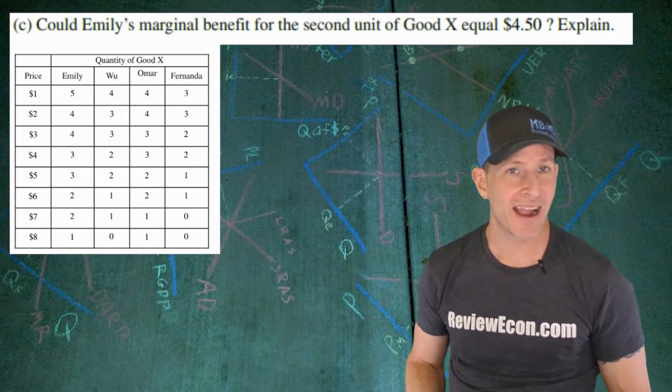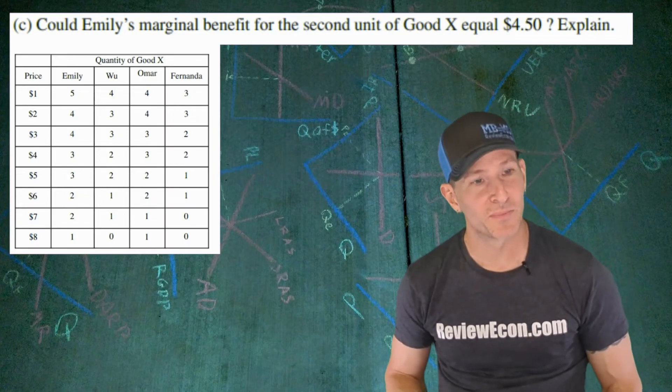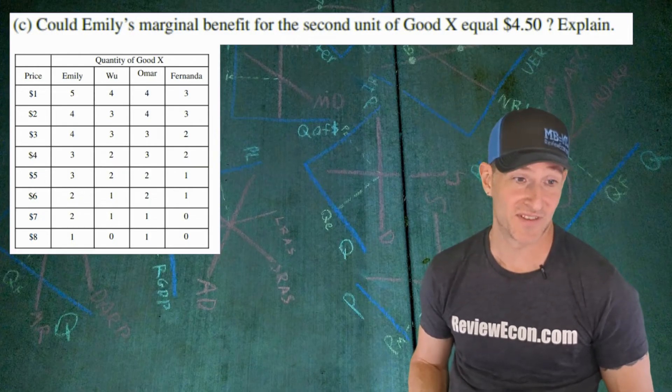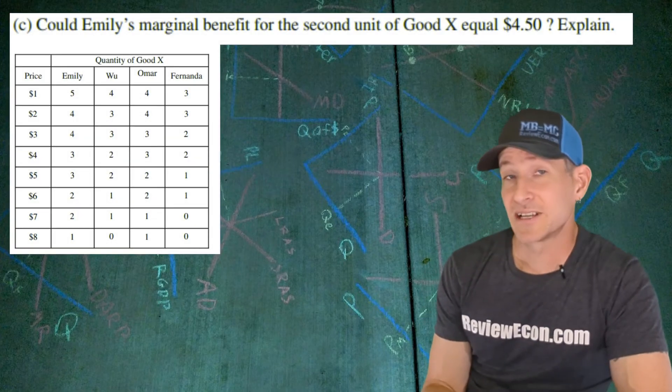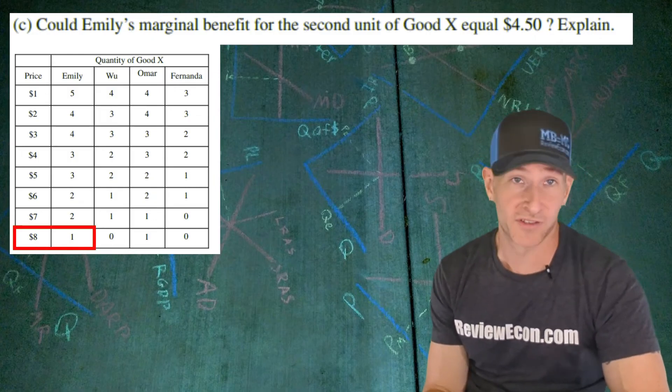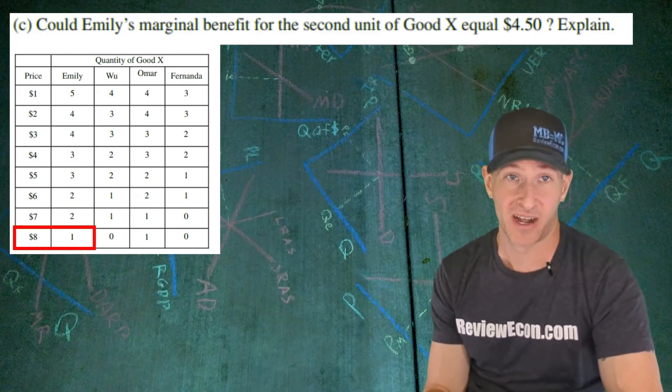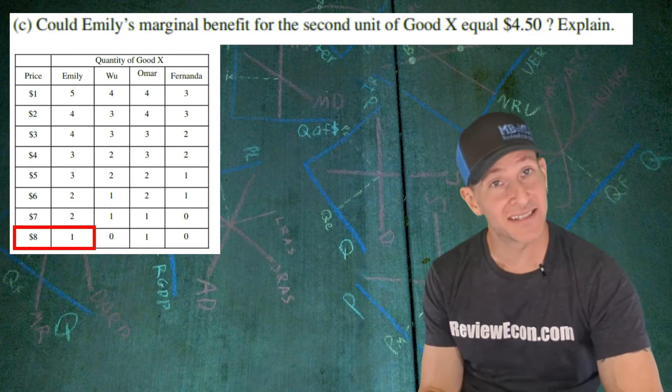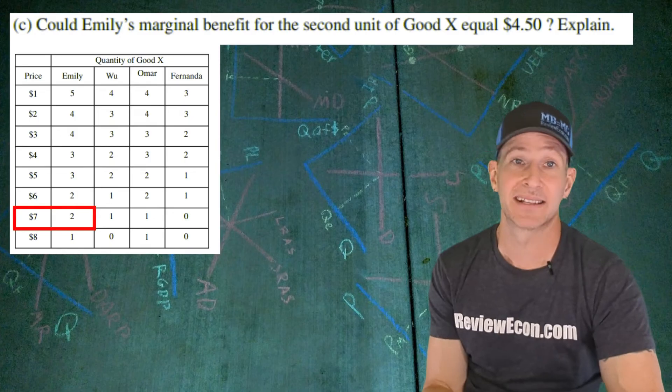Finally, for part C, we are asked if Emily's marginal benefit for the second unit of Good X could be equal to $4.50. And we have to explain. And if you look at the table, we can see that Emily is only willing to purchase one unit of Good X at the price of $8. And the price of Good X has to fall to $7 before she is willing to buy a second unit.